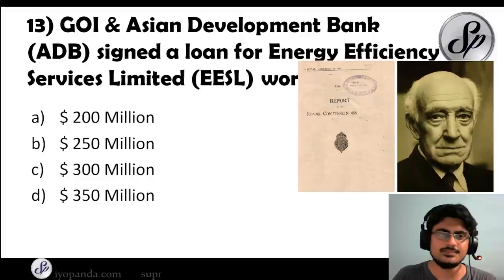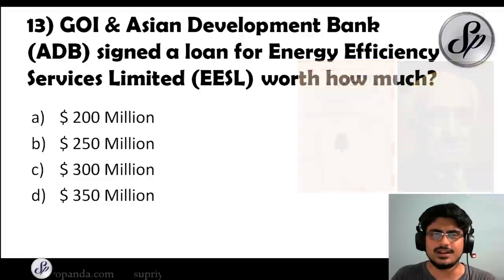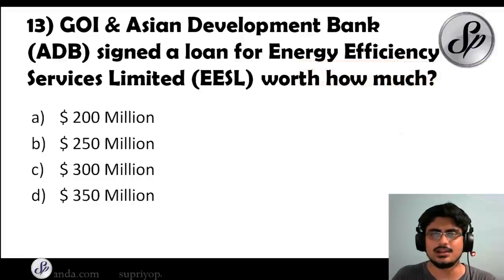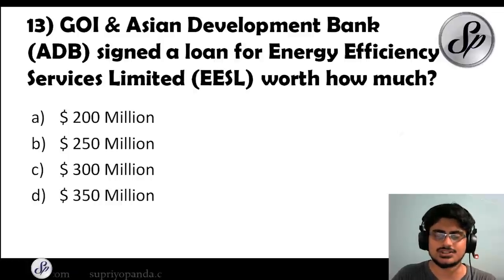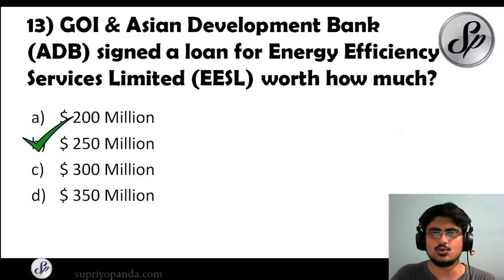Question thirteen: the Government of India and the Asian Development Bank signed a loan for Energy Efficiency Services Limited. Worth how much? The answer is $250 million.